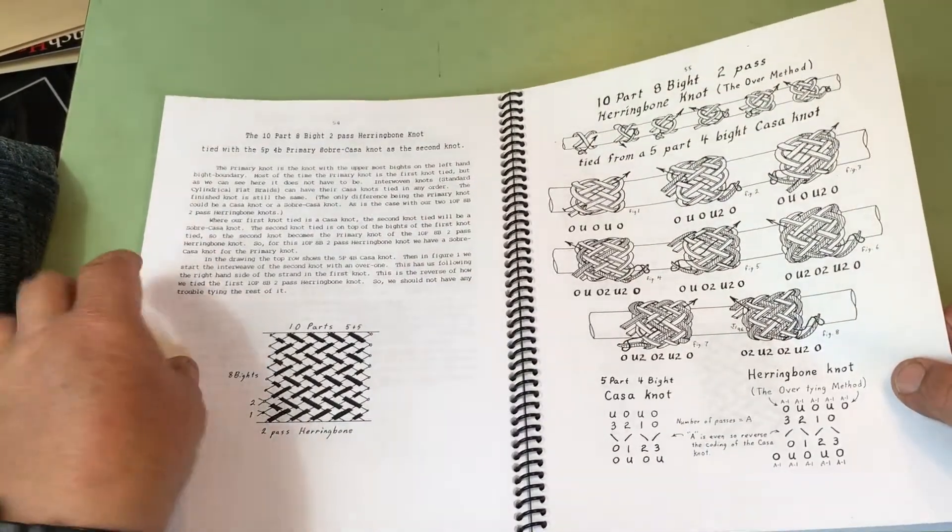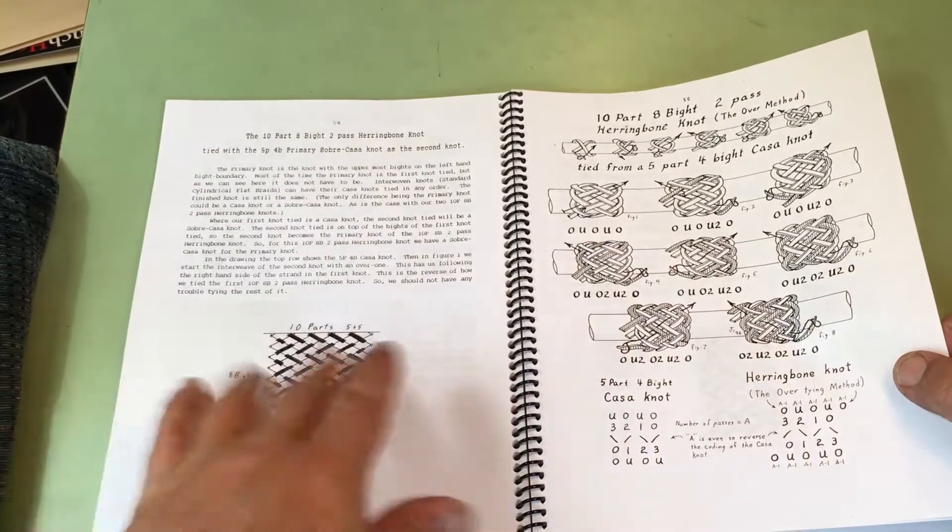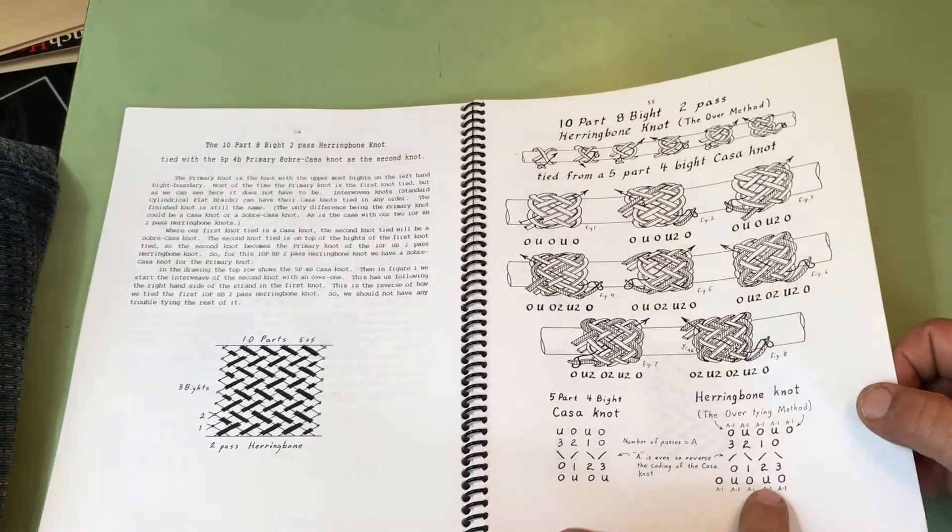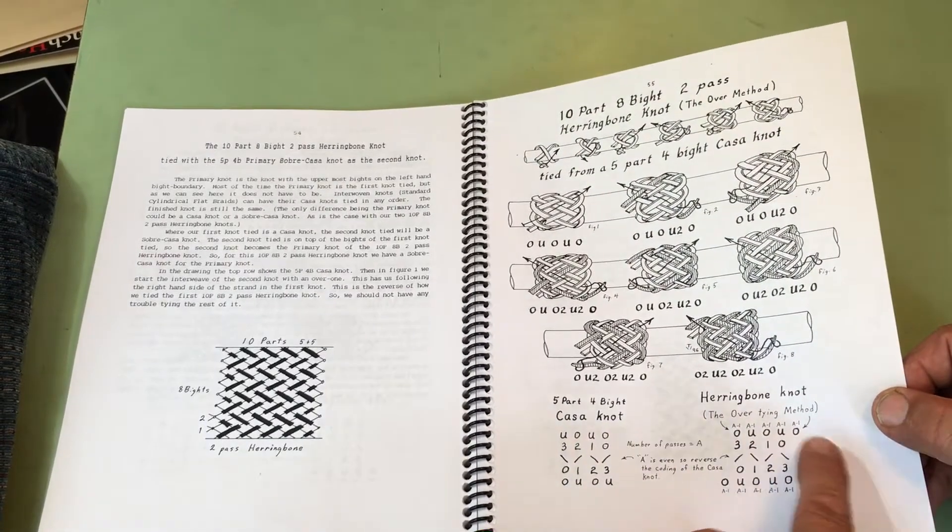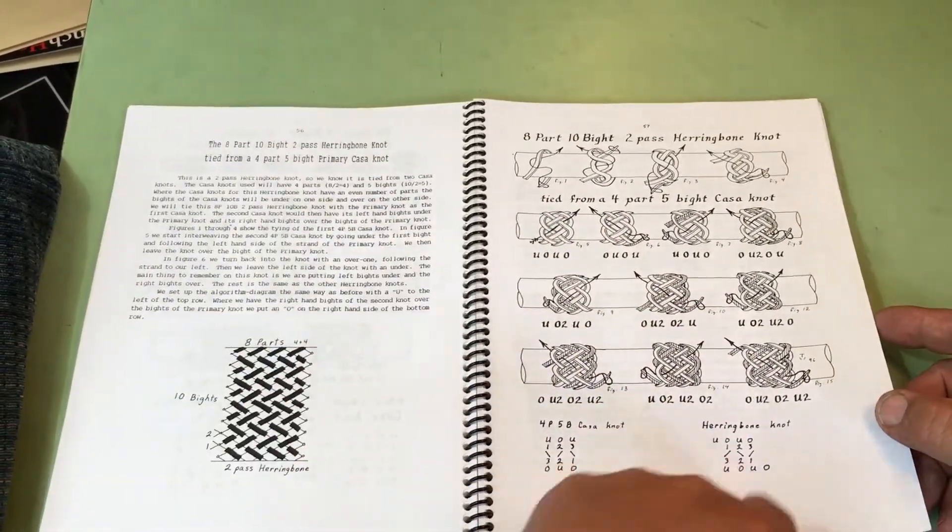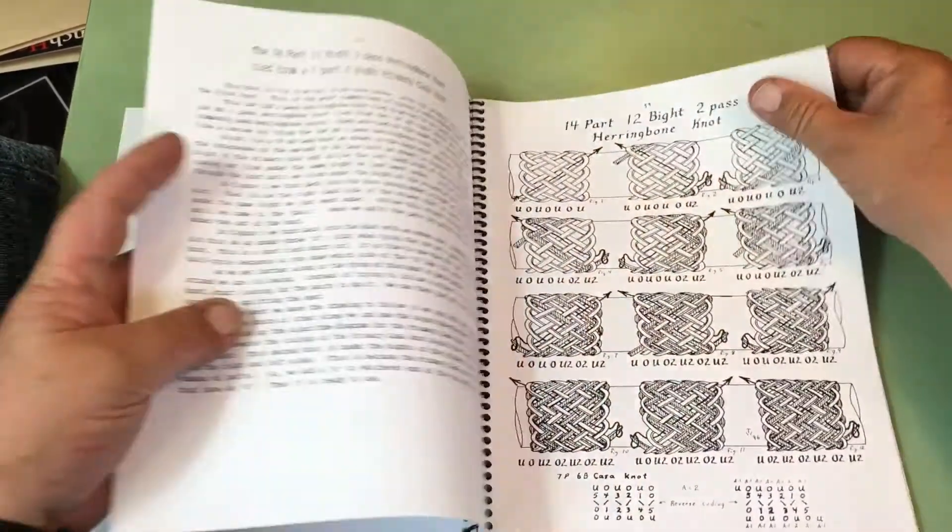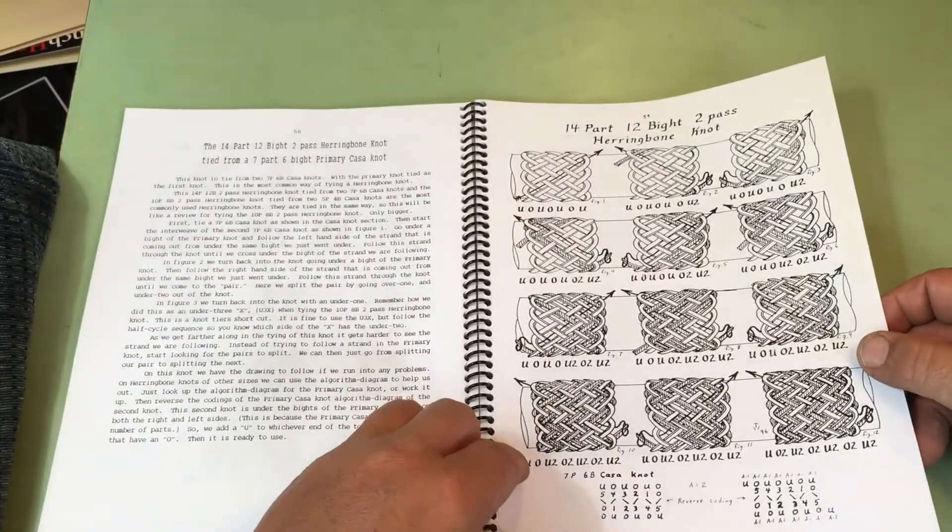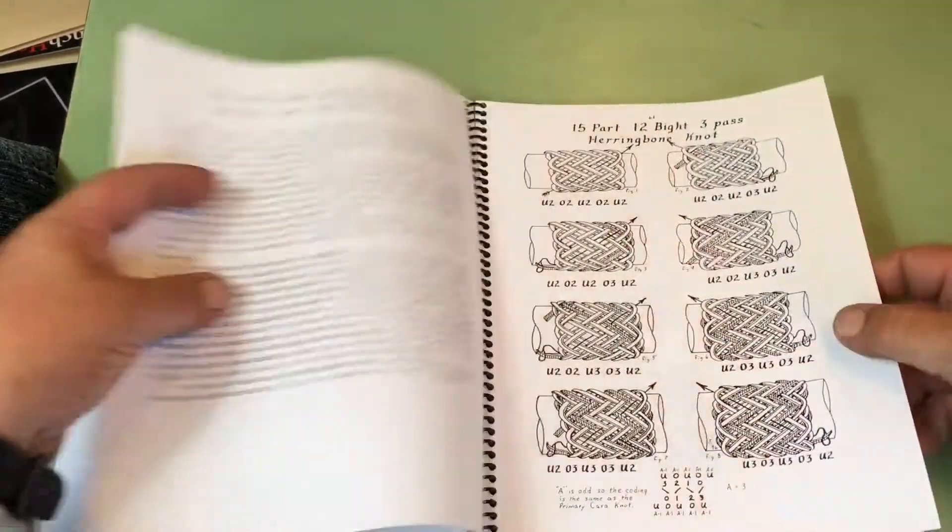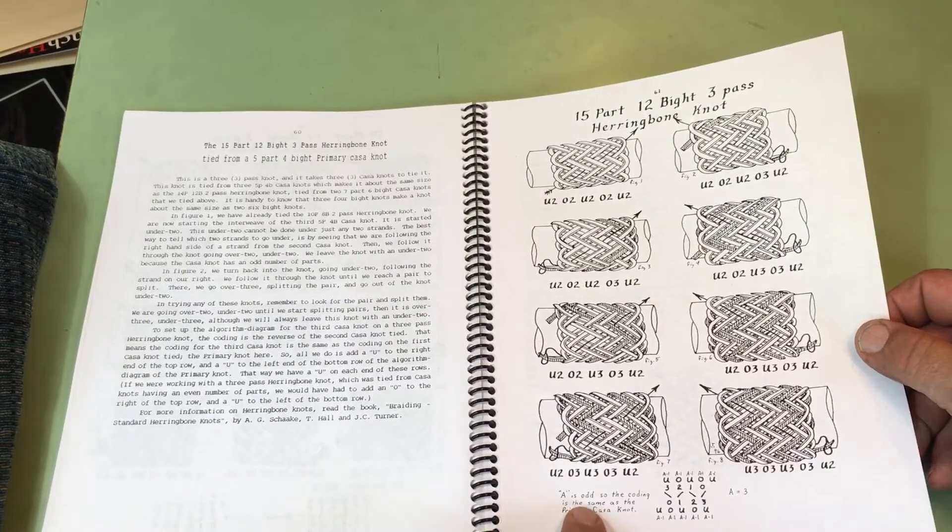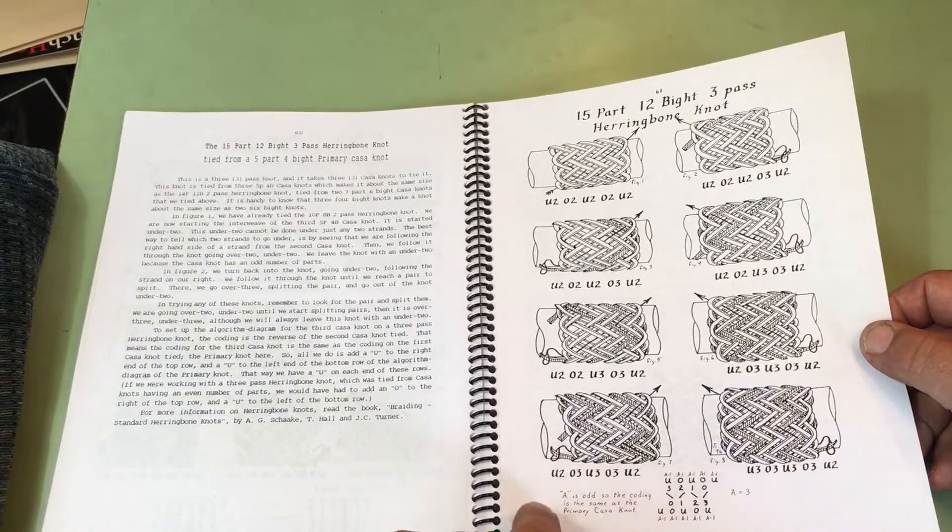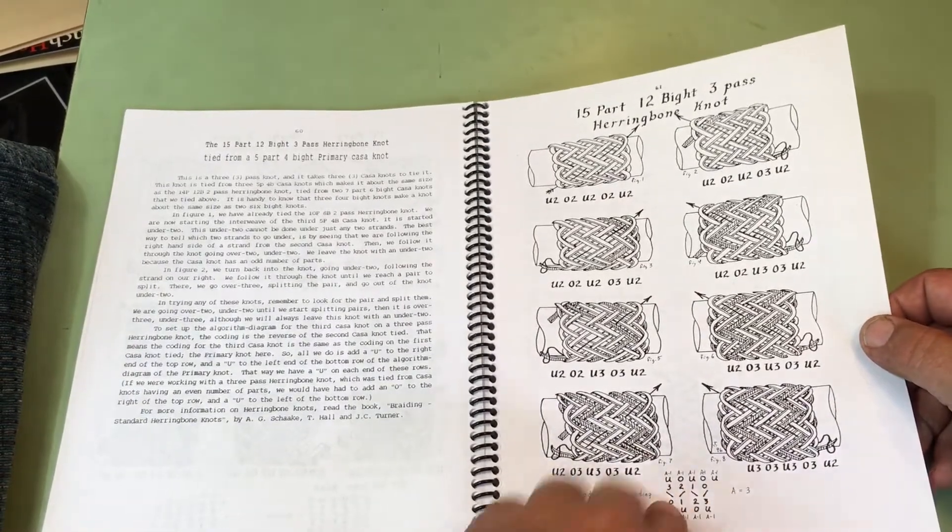Here's a herringbone that is tied on top instead of underneath. See how the bights are on top? So, it's the over method. On this, you set it up over here. Here's a herringbone that was regular. Herringbone that's two-pass. Okay, let's get to the herringbones. Well, here's a three-pass. And see, now that the three-pass is odd, A is odd, it is the same as the base knot. Where if it was an even number, you have to switch coatings.